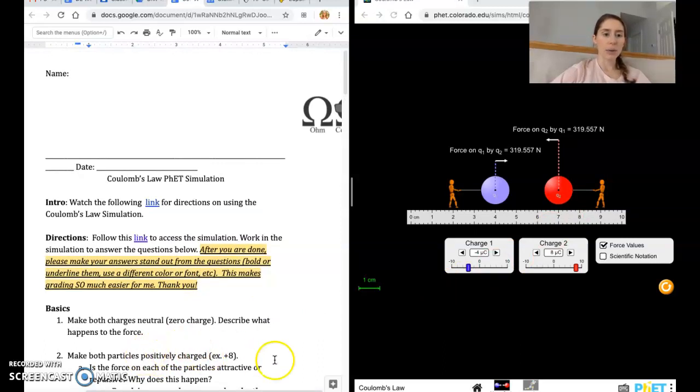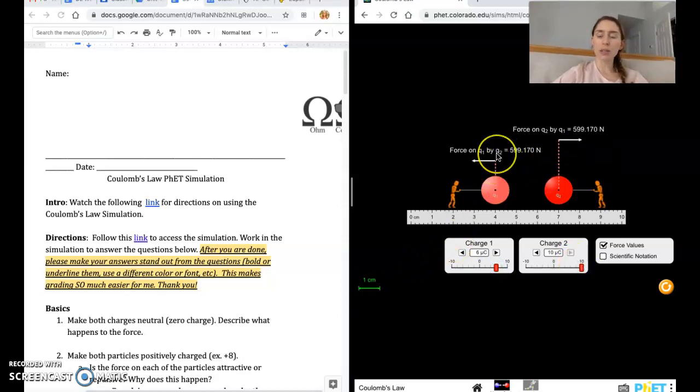It says make both of the particles positively charged. So I'm going to adjust them to make the one on the left positive and the one on the right positive. And then what kind of force do I get? Hopefully you see this is a repulsive force with the arrows pointing away from each other. Those two charges are going to push away from each other.